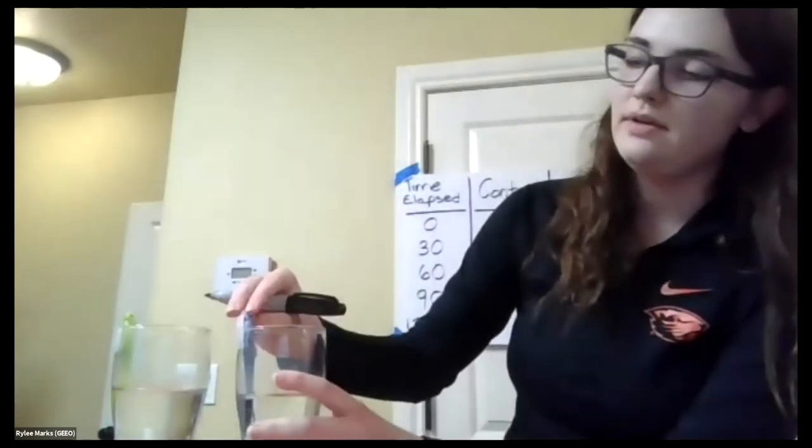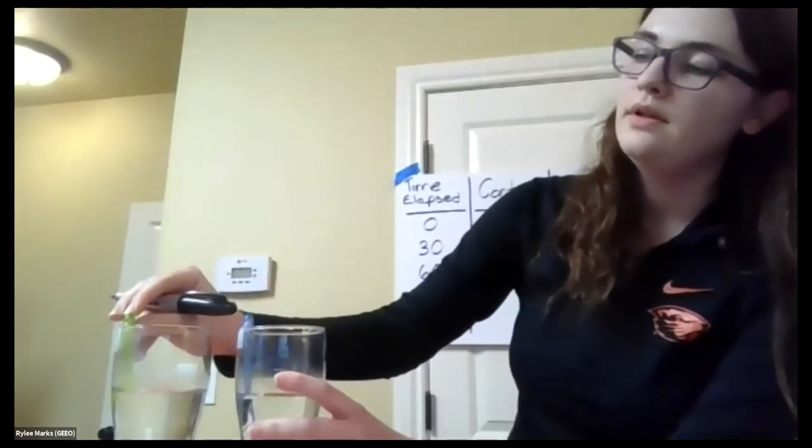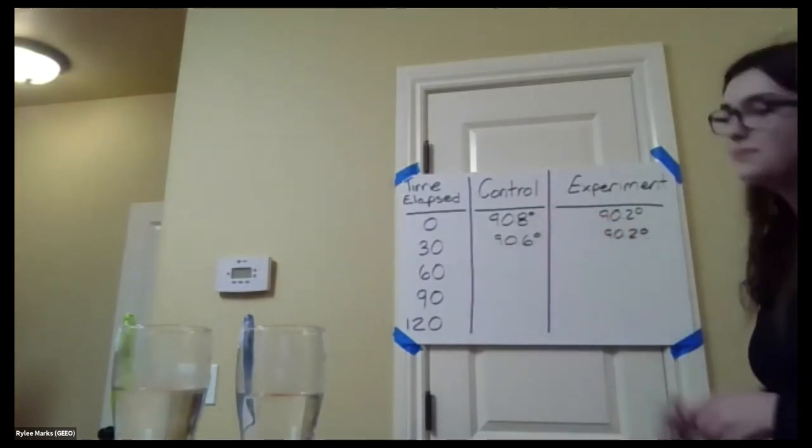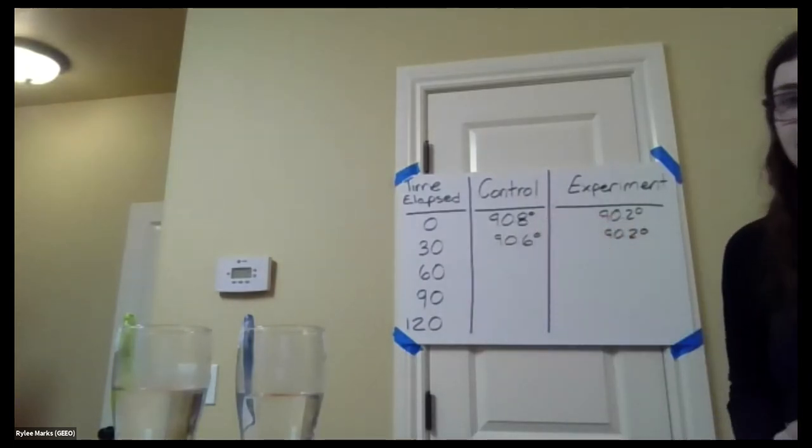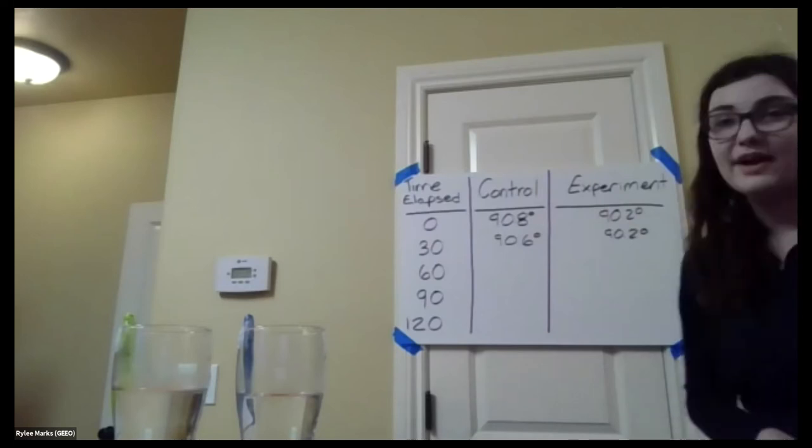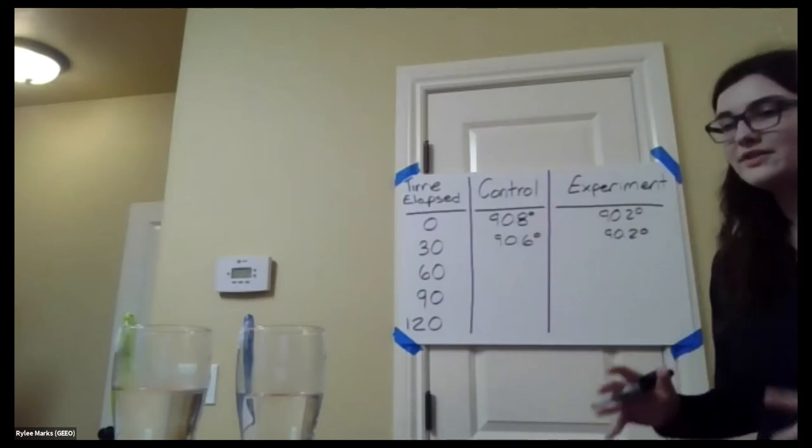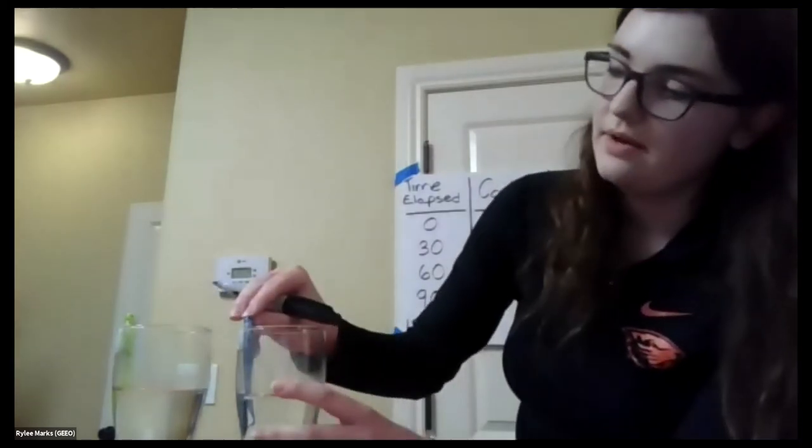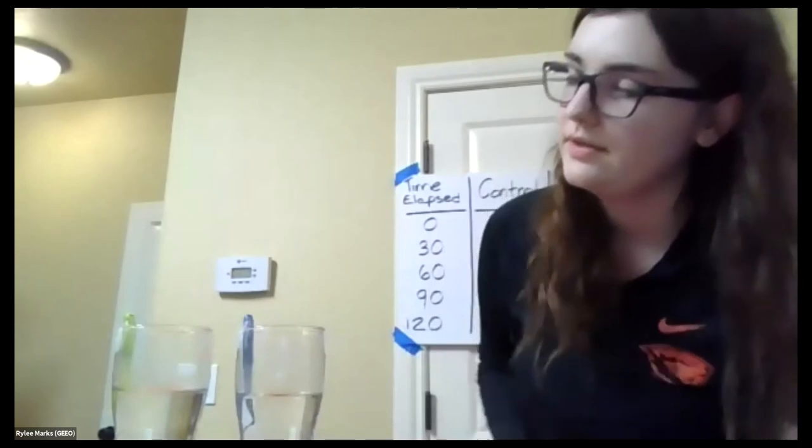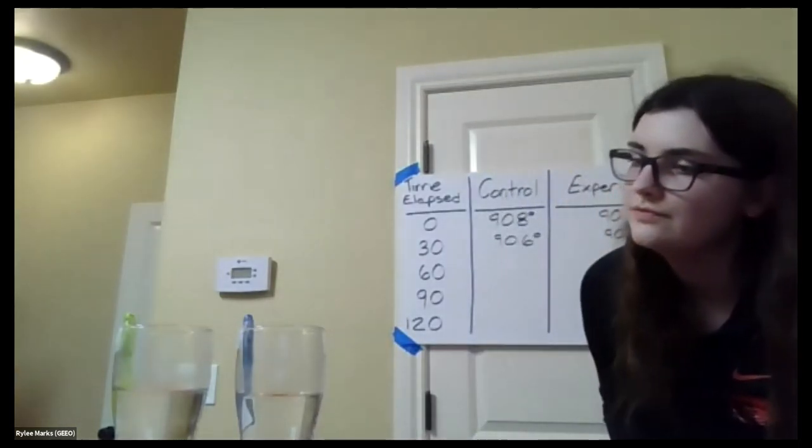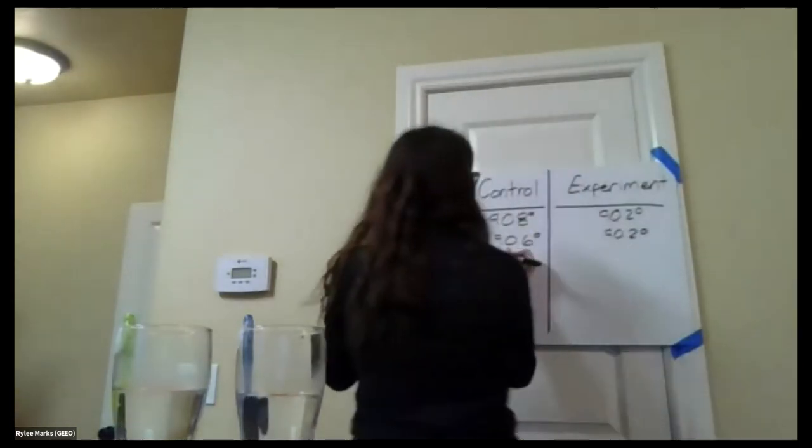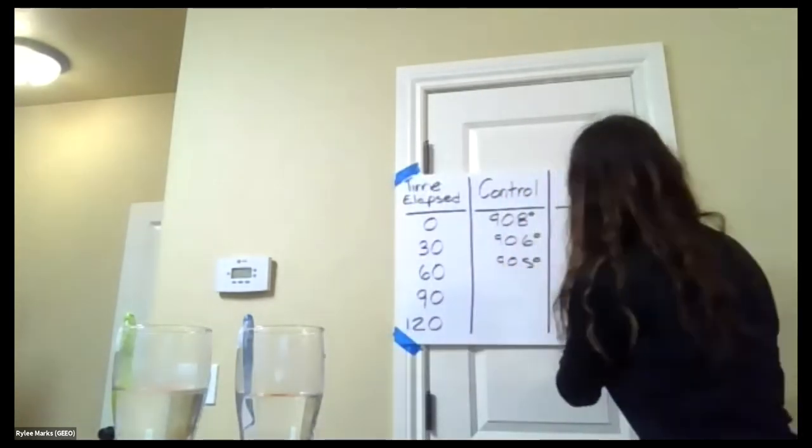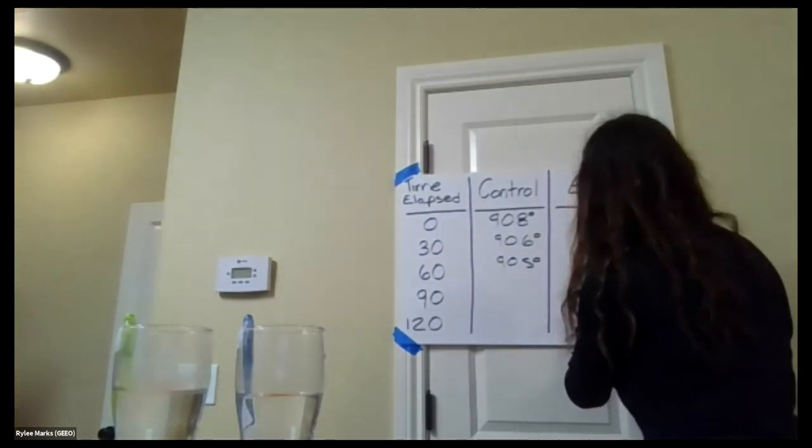We're going to keep our timer going. Now what's important about having a control is that you can compare other variables. As our experiment began, our water is at two different temperatures. So as it goes on, they might also be at two different temperatures. But all we want to change here is whether or not the water has mint in it. Let's reset them and take our one-minute mark. All right, our control is at 90.5 degrees. And our experiment is at 90.1.